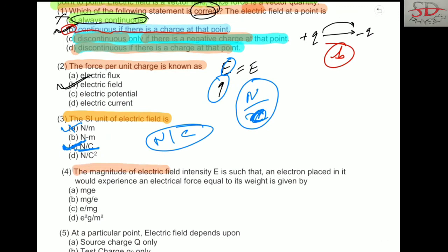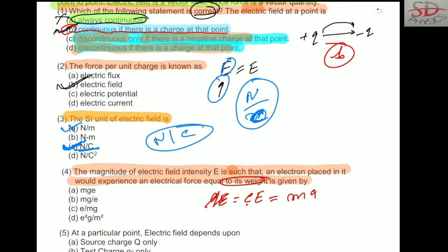Question 4: The magnitude of electric field intensity such that an electron placed in it would experience an electrical force equal to its weight. The force on the electron is Q into E, and since Q here is the electron charge e, this becomes e times E. Setting this equal to the weight, we get eE = mg, so E = mg/e, which is the right answer.